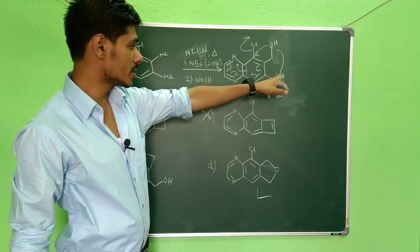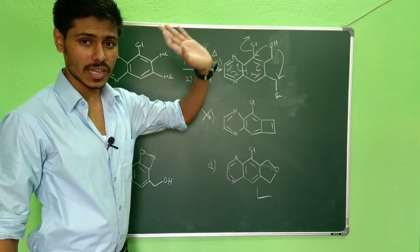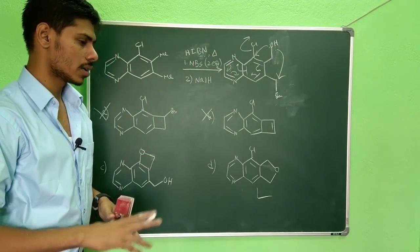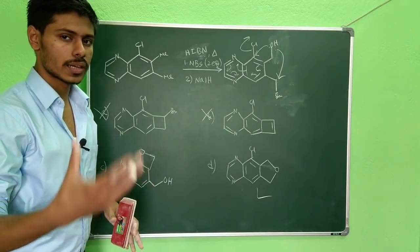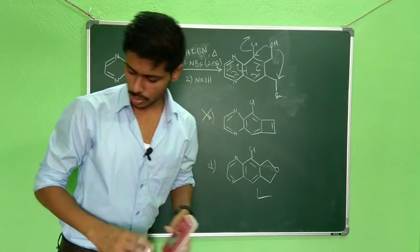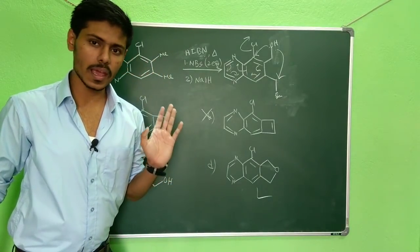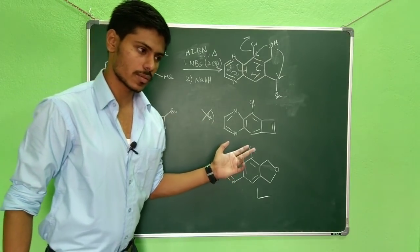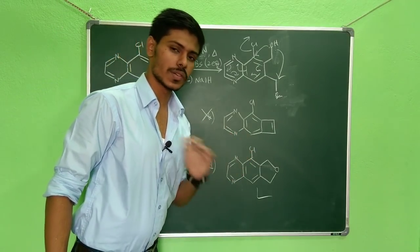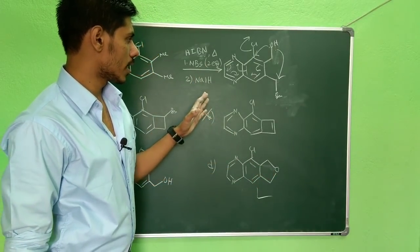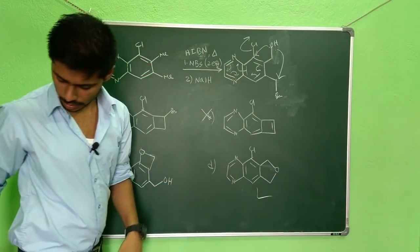If you don't get the point, I recommend you to watch my video on Baldwin's rule. So five-exo-tet is much more favorable than four-endo-trig. Four-endo-trig is not favorable at all, and that's why the reaction will follow this pathway. So this product we can rule out, and we have this option. So option D is the correct option.